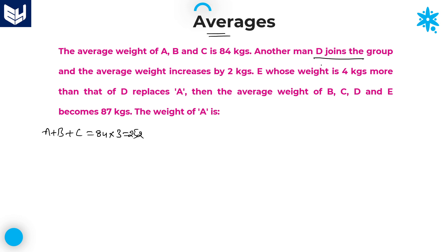Another man D joins the group and the average weight increased by 2 kgs. Before D joins the group, average is 84. After D joins the group, the average is increased by 2 kg, which means the new average is 86.